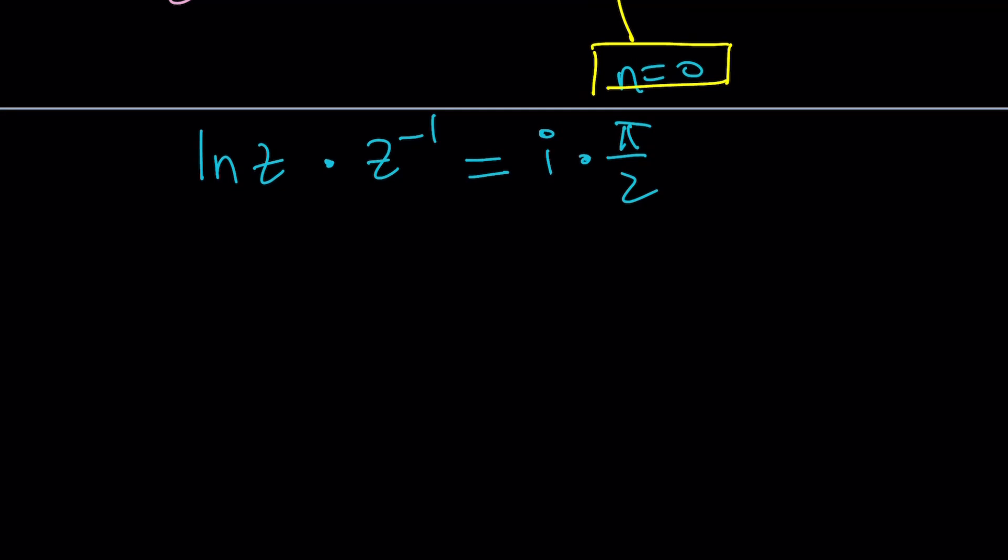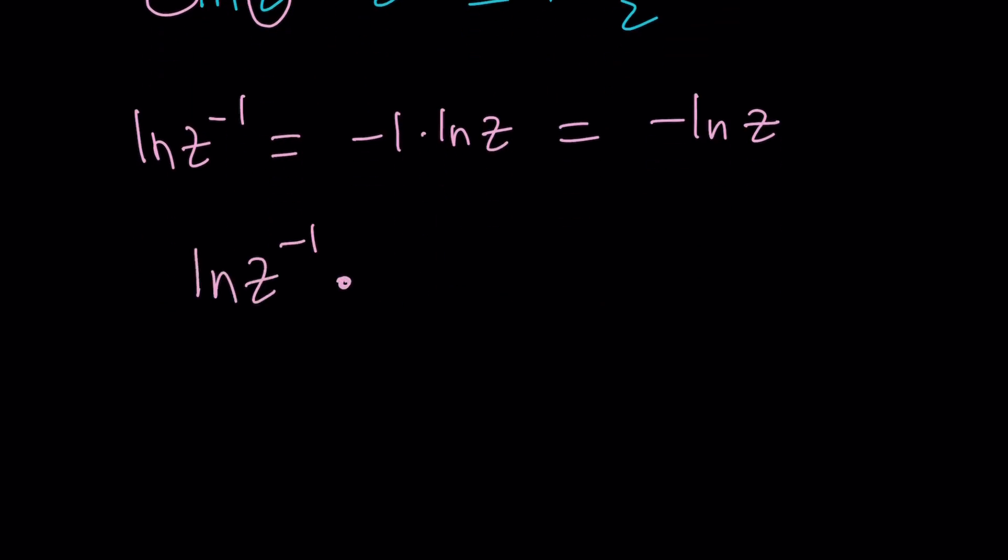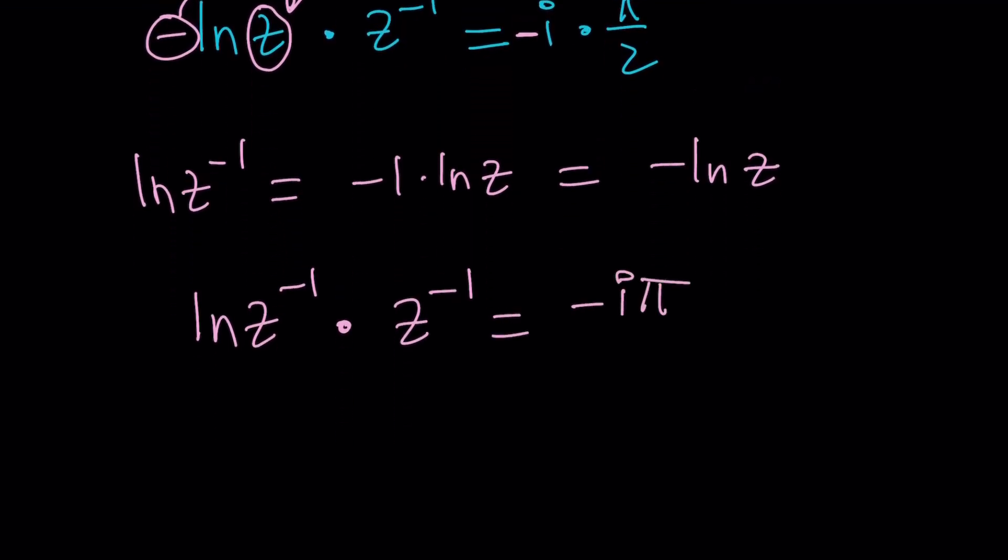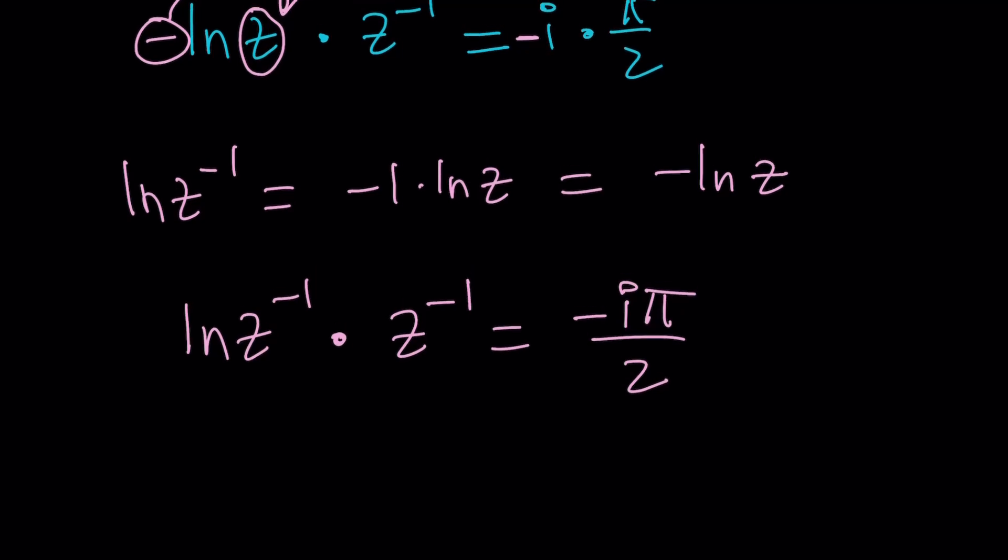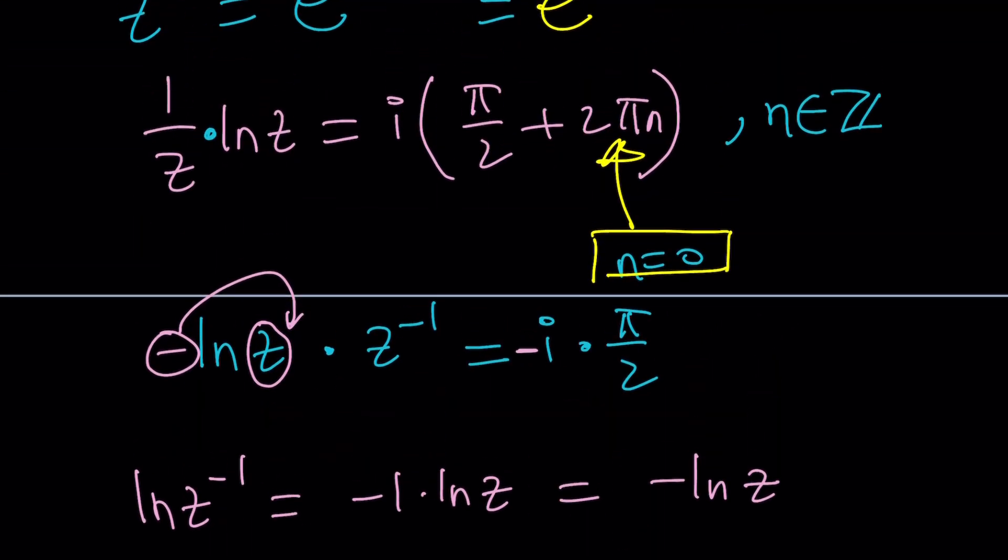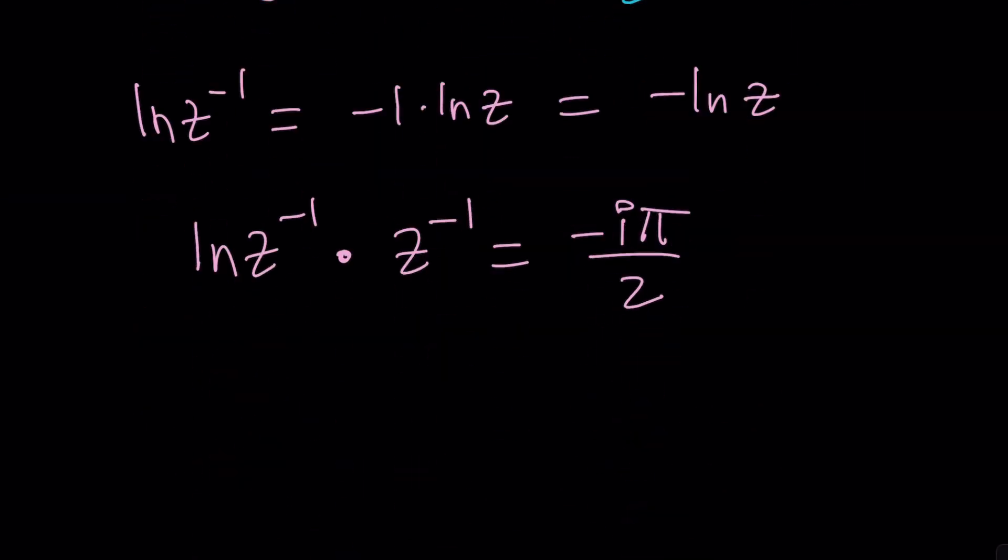Now I have ln z and z to the power negative 1. I would like to have the same thing here because I'm going to put it in a special form. What is ln z to the power negative 1? It is negative 1 times ln z or negative ln z. So we can multiply both sides by negative 1. That's just going to bring a minus sign on both sides. So now our expression becomes ln z to the power negative 1 times z to the power negative 1 which is nice because they are the same equals negative i pi over 2. Again if you want you can replace pi over 2 with pi over 2 plus 2 pi n every time that appears.